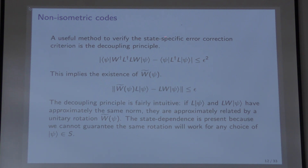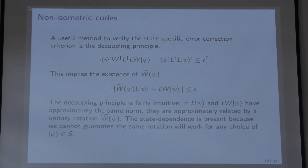A useful method to verify the state-specific error correction criteria is called the decoupling principle. The decoupling principle is essentially this formula: the left-hand side, which is the difference between the squared norms of L W psi and L psi, should be less than or equal to epsilon squared. It's not hard to see that this implies the existence of W̃ that is state-dependent. Here, I'm not saying anything about S yet — it will be clear later why this sort of thing can only be true for a subset of states.